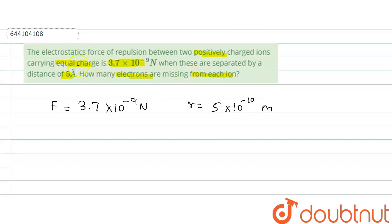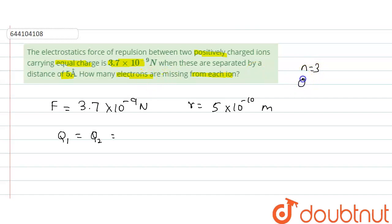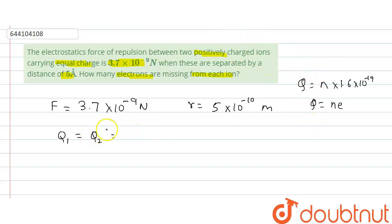The charges are equal, so the charge on q1 equals the charge on q2. Now, why will there be any charge? Since these are positively charged, they must have lost electrons. The number of electrons lost gives the charge. So if n electrons are missing, the charge q equals n × e, where e is 1.6 × 10⁻¹⁹ coulombs.